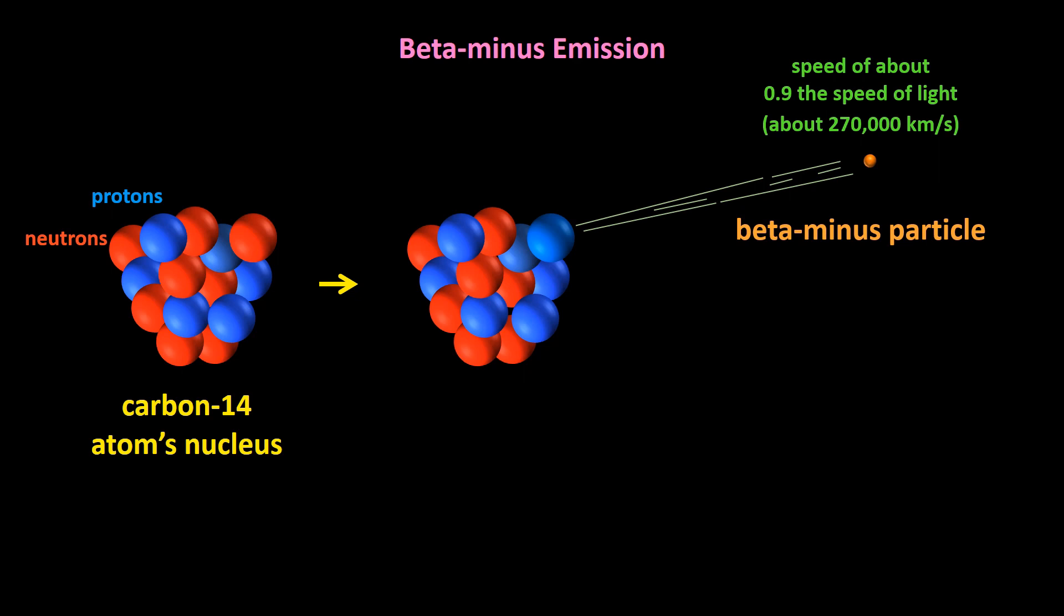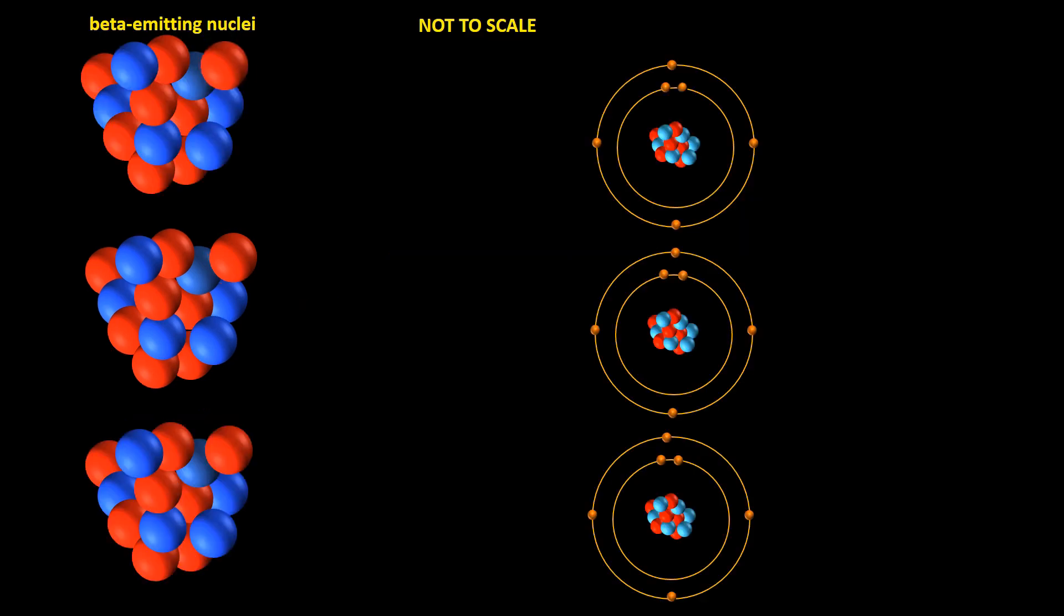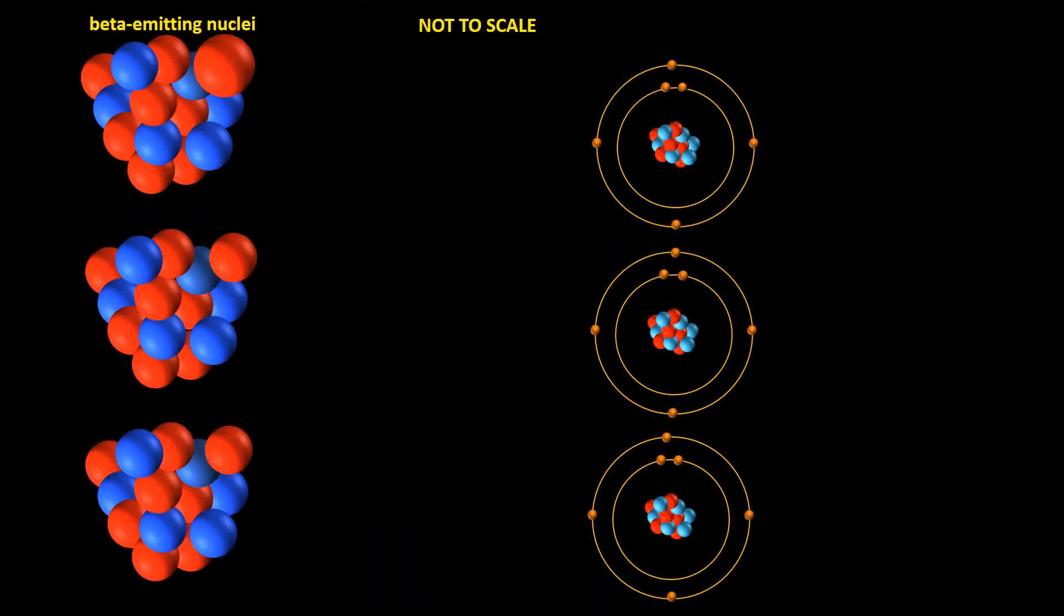A beta minus particle is literally identical to an ordinary electron. However, since as soon as it's created in the decay process, it is emitted at such high speeds, it pushes the electrons of other atoms away. Remember, electrons repel each other because they're all negatively charged, and this causes those atoms to become ions.